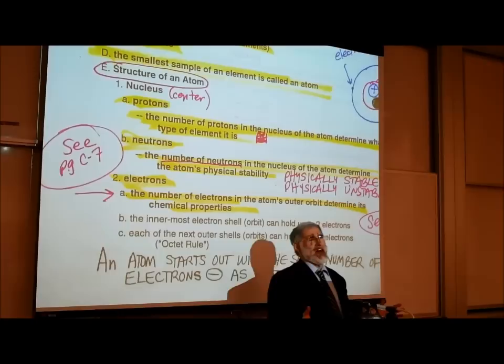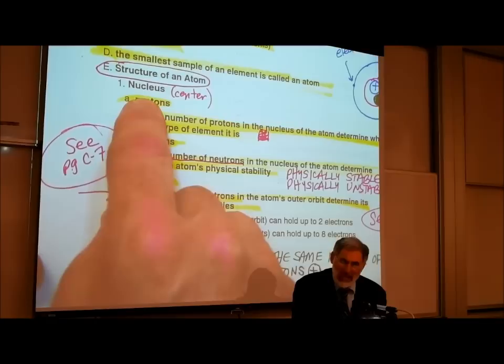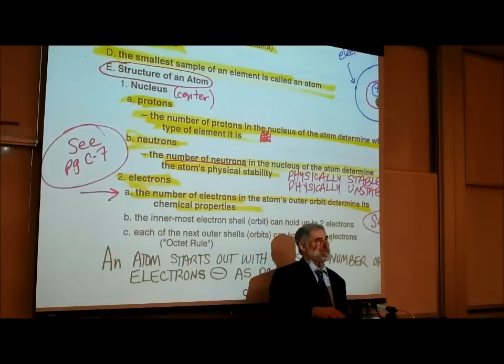What is an atom, and how would a gold atom differ from an oxygen atom or a uranium atom? In the structure of an atom, the area in the center is called the nucleus. The word nucleus means center.